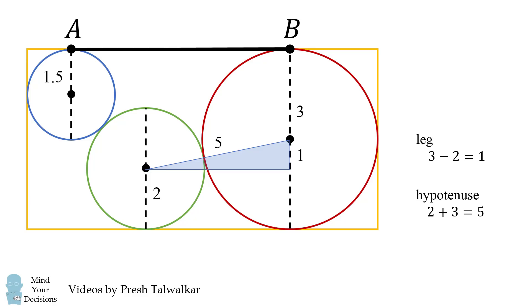We can now consider the horizontal distance between the green and red circles by using the Pythagorean theorem. This will be equal to the square root of the quantity 5 squared minus 1 squared, and this simplifies to be 2 times the square root of 6. So we've considered this horizontal distance, which is one segment of AB.